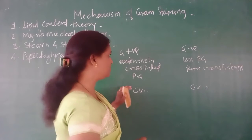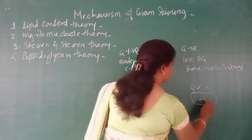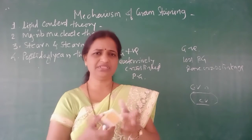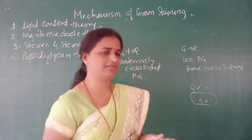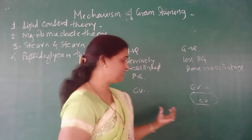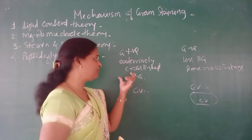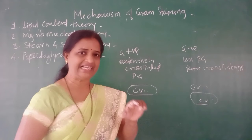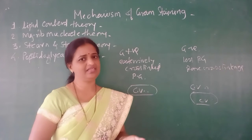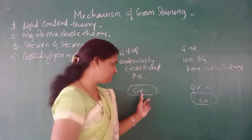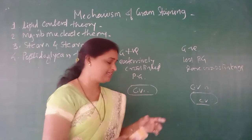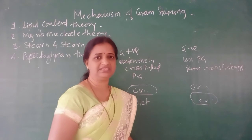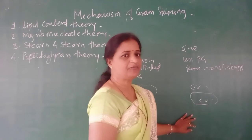When you perform the third step using 95% ethyl alcohol, it easily removes the crystal violet from Gram negative bacteria because they have very little and less cross-linked peptidoglycan. In Gram positive bacteria, because the peptidoglycan is very rigid and extensively cross-linked, the crystal violet gets trapped in the cell and cannot be removed by the ethyl alcohol used in the third step. So Gram positive bacteria remain violet.